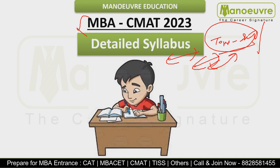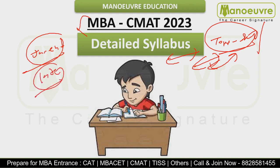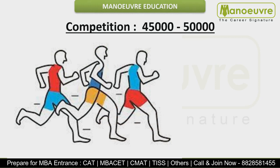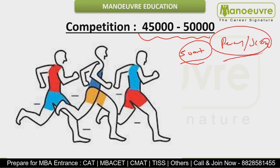Ideally the exam happens in the month of January — Jan end mein aapka exam hoga — but since last year due to COVID, exams have been delayed. So ideal time hai Jan end ya maximum Feb tak pakad ke chalo CMAT ke liye. CMAT has 45,000–50,000 applicants appearing for the examination, although we have 500-plus colleges who accept the CMAT score. So aapka percentile aur score kya aa raha hai, uske basis par aapko college milega, so try to hit maximum score so that you end up with the top 10, top 30, or top 50 colleges.